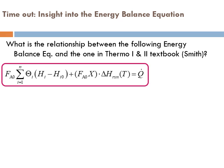Let's gain insight into the energy balance equation. What is the relationship between the energy balance equation we derived in this course and the one in the Thermo 1 and Thermo 2 textbook by Smith and Van Ness, where it was simply ΔH = Q?